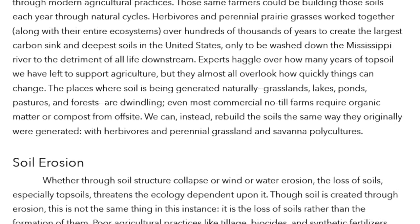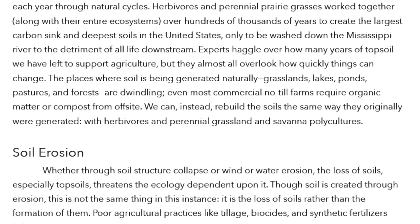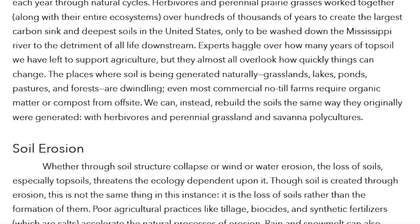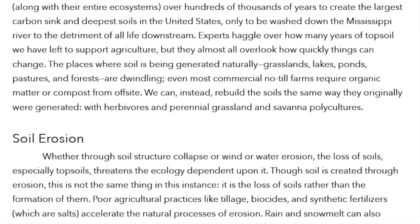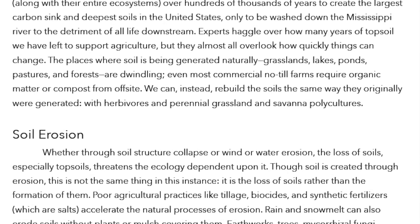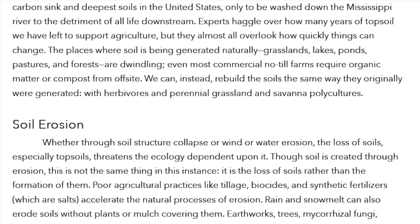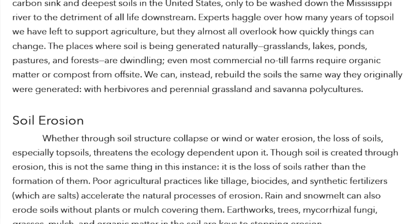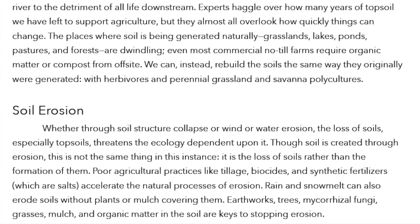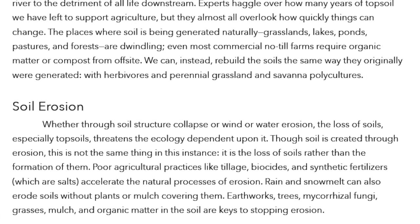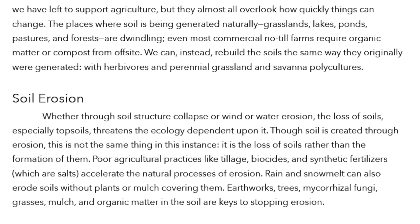Experts haggle over how many years of topsoil we have left to support agriculture, but they almost all overlook how quickly things can change. The places where soil is being generated naturally — grasslands, lakes, ponds, pastures, and forests — are dwindling. Even most commercial no-till farms require organic matter or compost from off-site. We can instead rebuild the soils the same way they were originally generated, with herbivores and perennial grassland and savanna polycultures.